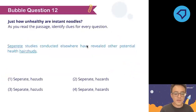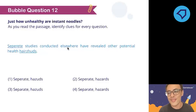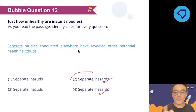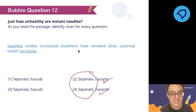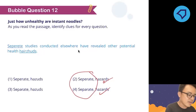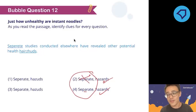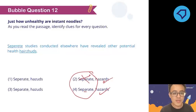Number twelve: which word is spelled correctly? 33% of you got this wrong. Remember this if your life depended on it: 'separate' is not spelled S-E-P-E-R-A-T-E. It is spelled S-E-P-A-R-A-T-E. The answer is number four: S-E-P-A-R-A-T-E. Even I sometimes make this mistake — separate, A-R-A-T-E.